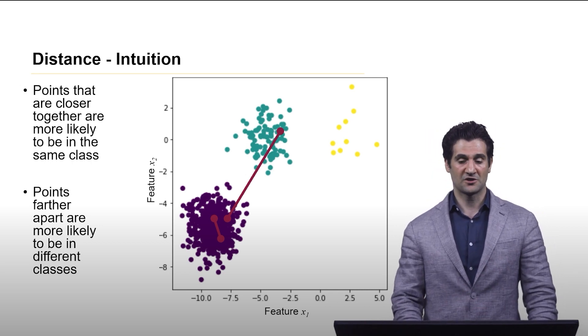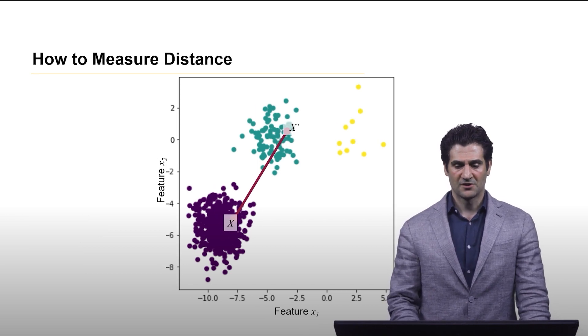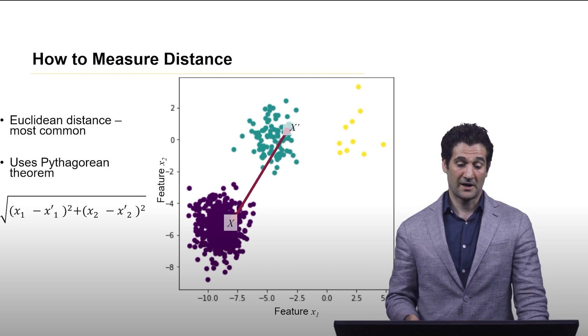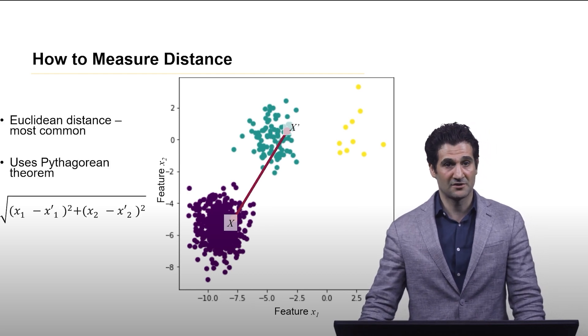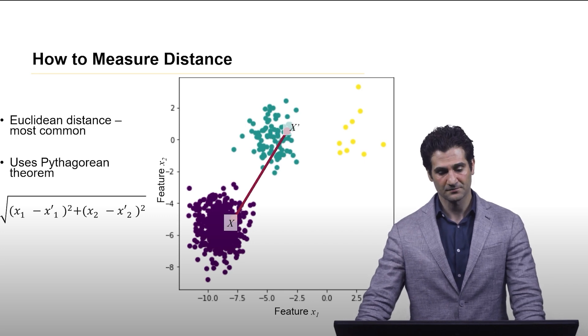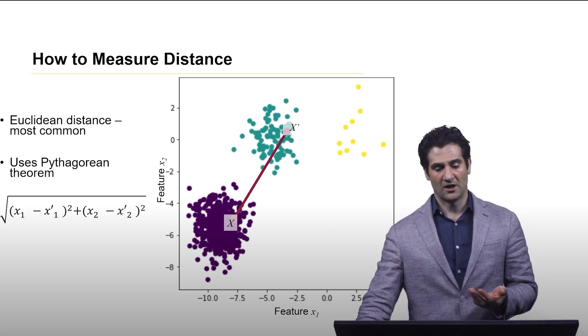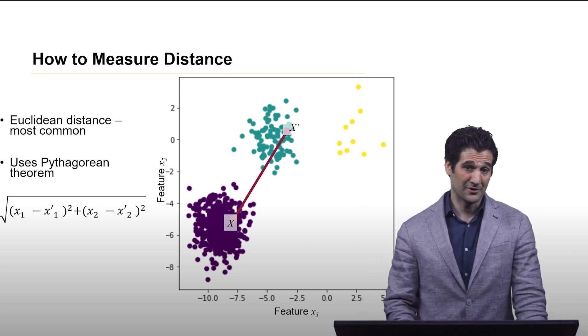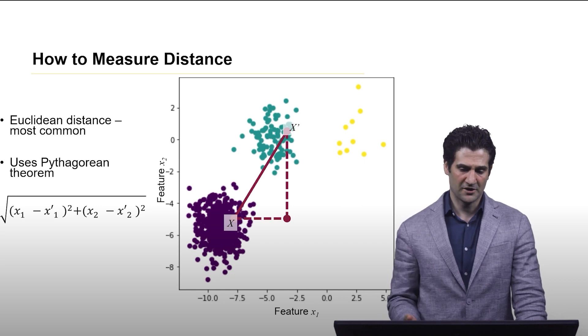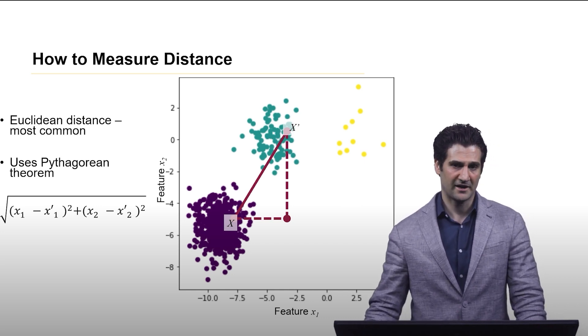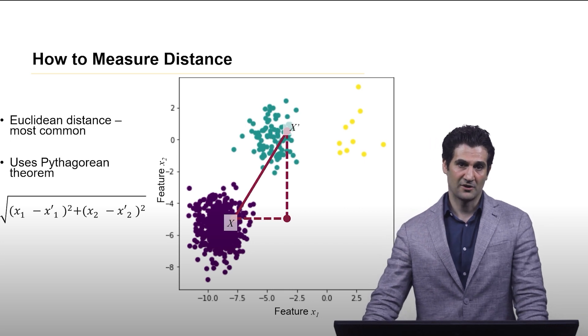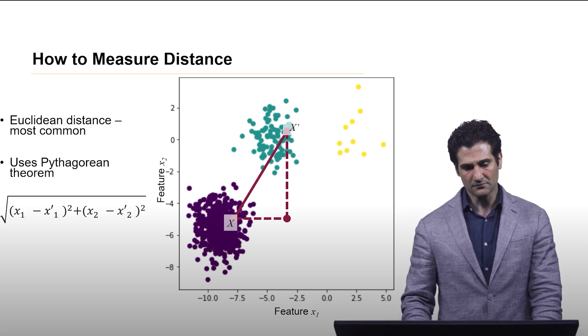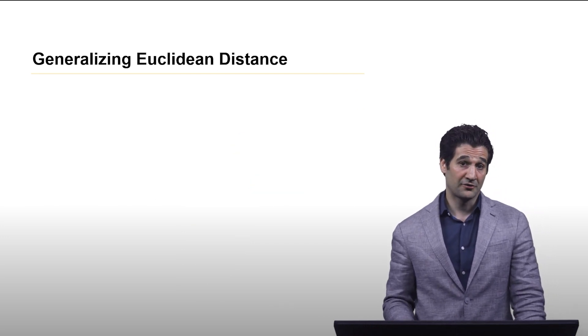Here are two feature vectors x and x prime. Probably the most common way to compute distance is what's called Euclidean distance. In this two dimensional space we're using Pythagorean's theorem essentially - we have those two points and the difference between them on the x and y axis, squaring those differences and then finding the square root of the sum.